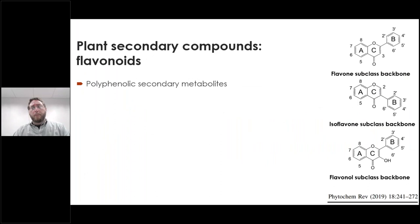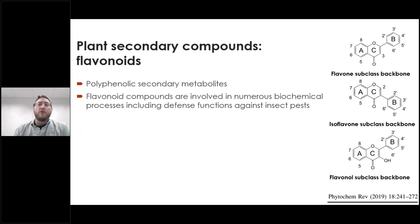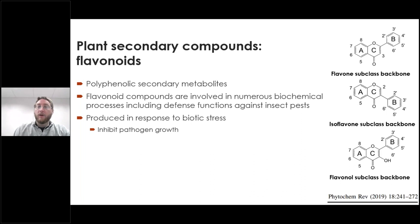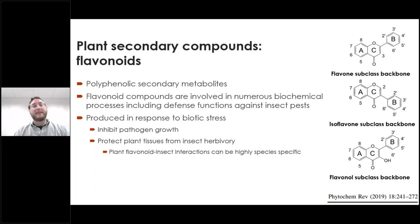I want to give a brief background on the three players in this system. First, plant secondary compounds — flavonoids. They're polyphenolic secondary metabolites involved in numerous biochemical processes, including plant defense, particularly against insect pests. They're produced in response to biotic stress, can inhibit pathogen growth, and are involved in protecting plant tissues from insect herbivory. While they can be described as having a broad defense effect, they can actually have very highly specific flavonoid-insect interactions.